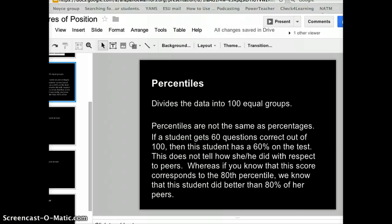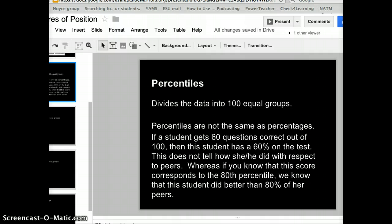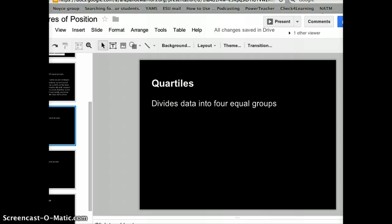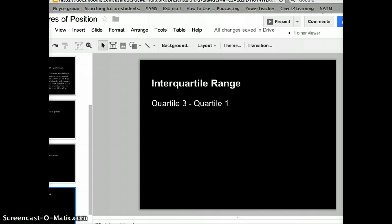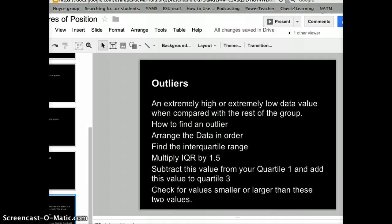We learned in the last video that percentiles divide the data into 100 equal groups, but sometimes that's too many groups. It's nice to have quartiles, which divides the data into four equal groups or quarters, and deciles, which divides it into ten equal groups. We'll also talk about interquartile range and what you can use that for in determining what outliers are in your data.